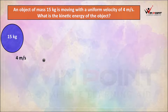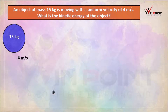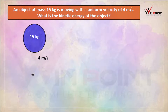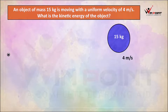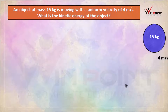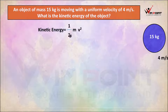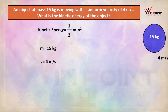The mass of that object is 15 kg and the velocity is 4 m/s. It is moving from one point to another. We are going to find the kinetic energy. Kinetic energy is equal to half mv squared — that is the equation. The mass is 15 kg and the value of v is 4 m/s.